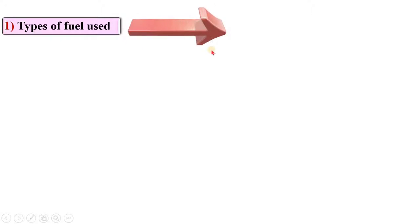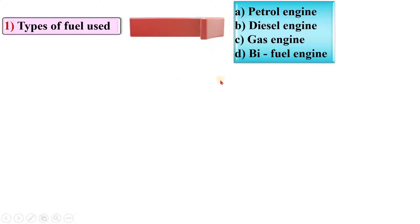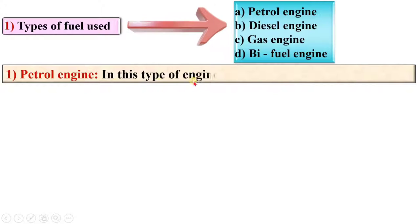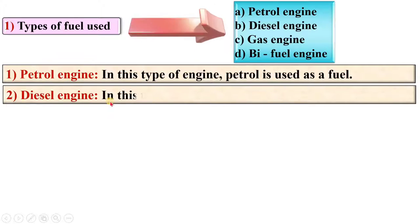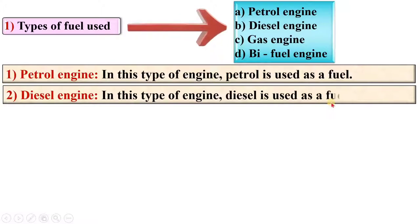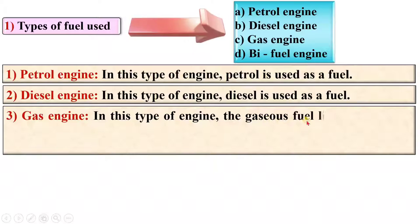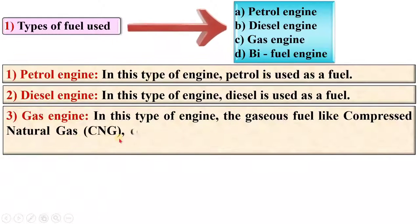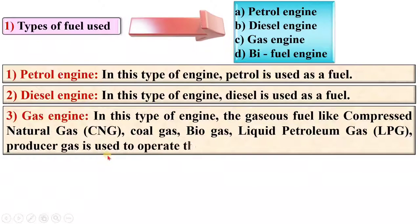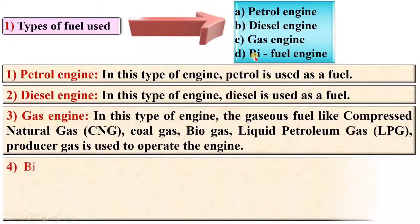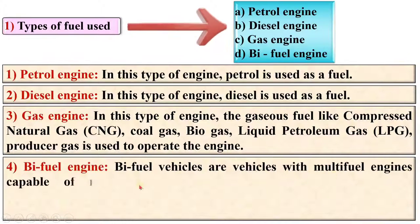According to the types of fuel used, IC engines are classified as petrol engine, diesel engine, gas engine, and bi-fuel engine. In a petrol engine, petrol is used as fuel. In a diesel engine, diesel is used as fuel. In a gas engine, gaseous fuels like compressed natural gas, coal gas, biogas, liquid petroleum gas, and producer gas are used to operate the engine.